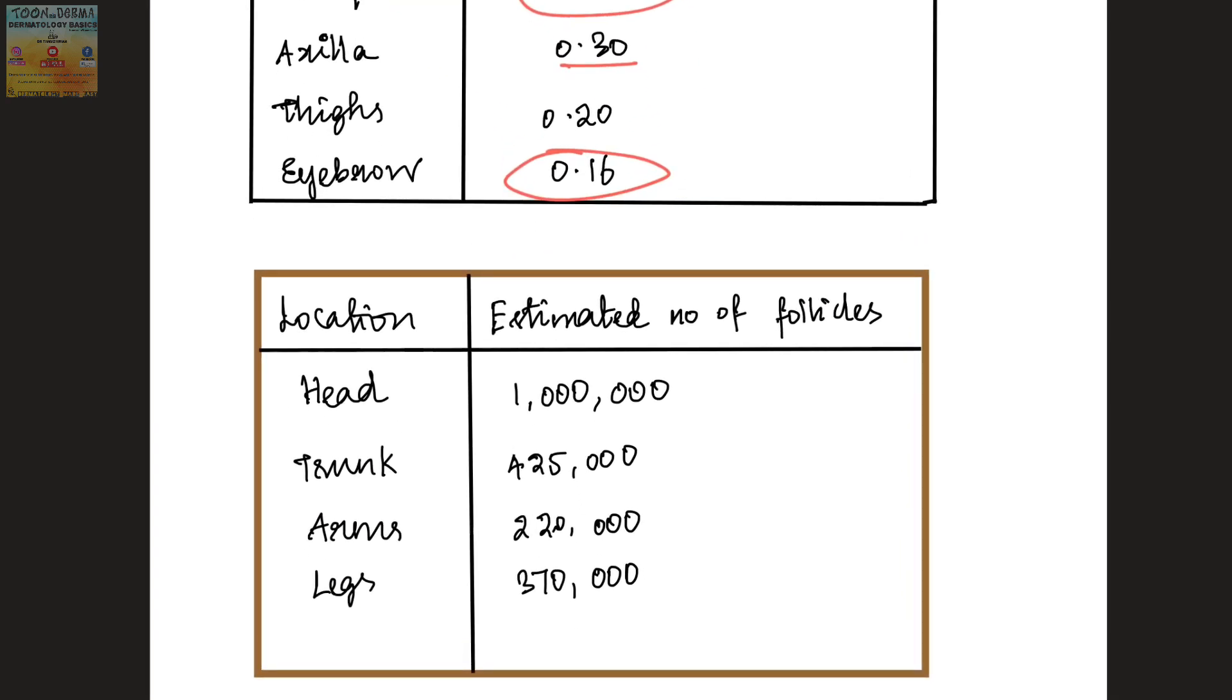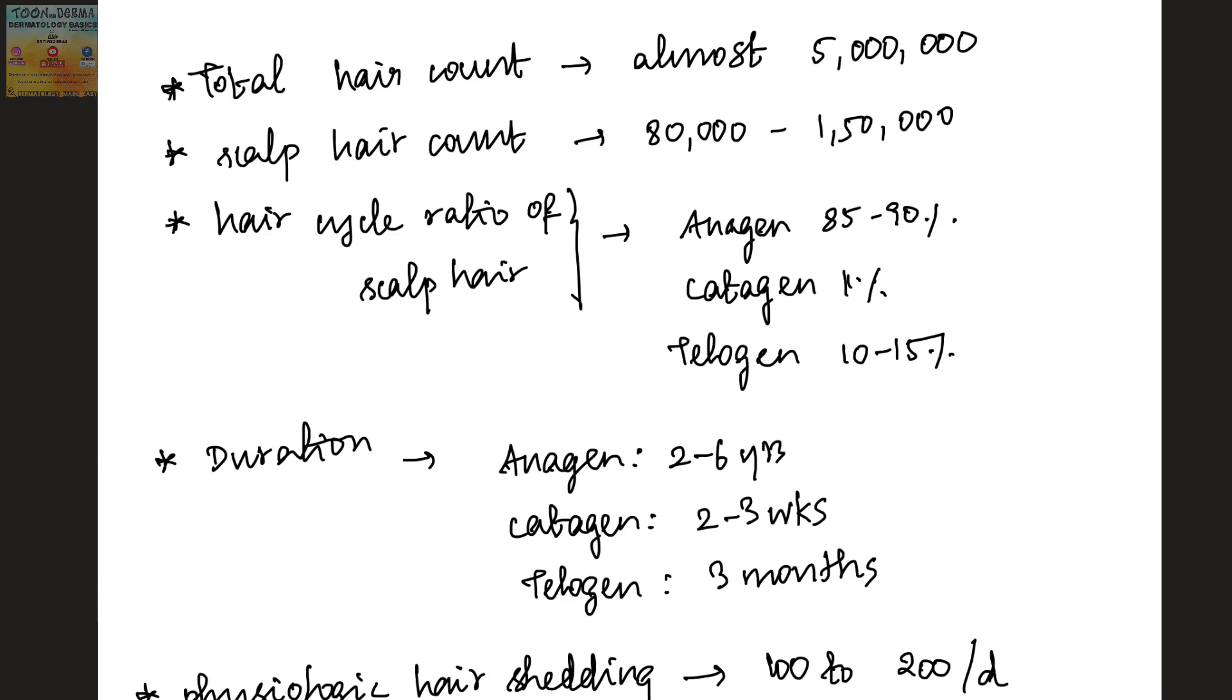The estimated number of follicles in head includes about 1 million follicles. In the trunk it is 425,000, in arms 220,000, and in legs 370,000. So the total hair count is almost 5 million in our body, of which the scalp hair count ranges from 80,000 to 150,000 at any time.